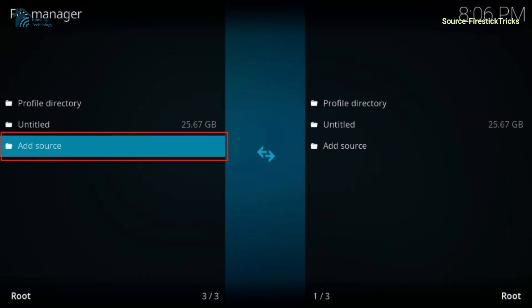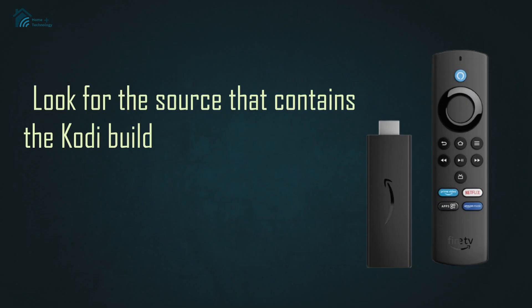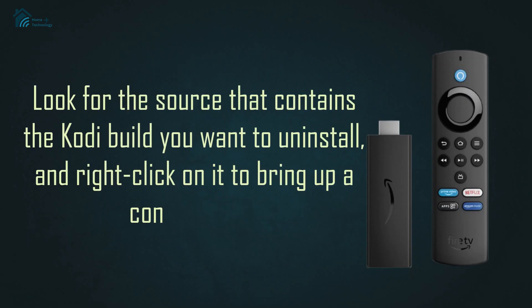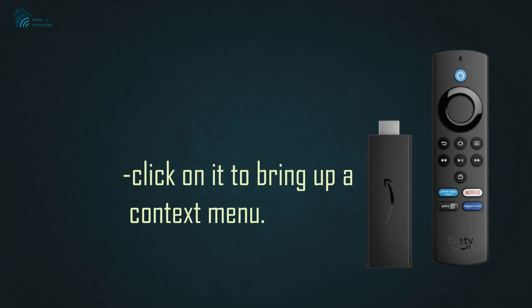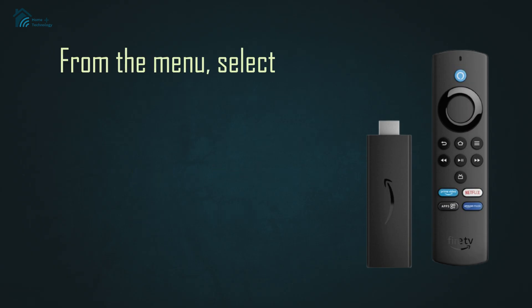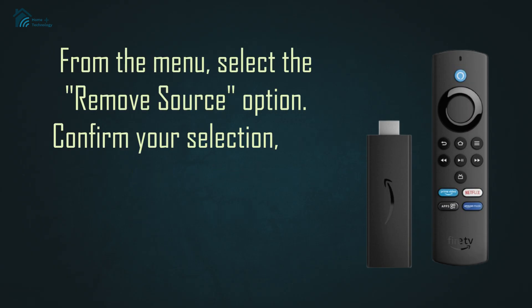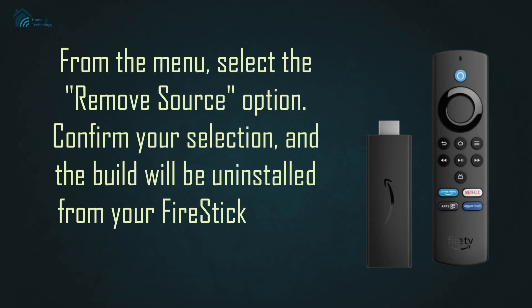In the file manager section, you'll see a list of sources and repositories. Look for the source that contains the Kodi build you want to uninstall and right-click on it to bring up a context menu. From the menu, select the remove source option.